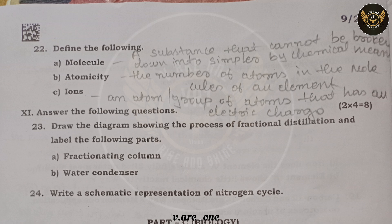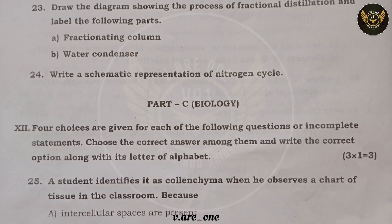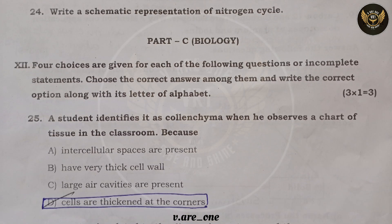Question twenty-three: write the diagram of fractional distillation and label the fractionating column and water condenser. Question twenty-four: write the schematic representation of the nitrogen cycle.